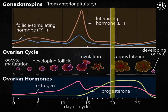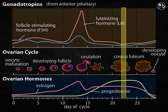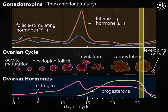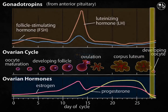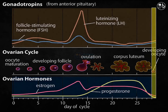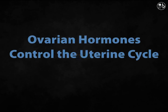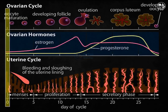The corpus luteum stays in the ovary secreting estrogen and progesterone, which suppress the release of FSH and LH. As a result, follicles cannot begin to form during the second half of the cycle due to decreased levels of FSH and LH. The corpus luteum requires LH or a hormone produced by an implanted embryo to stay alive, and it degenerates at the conclusion of the cycle if an embryo has not implanted.